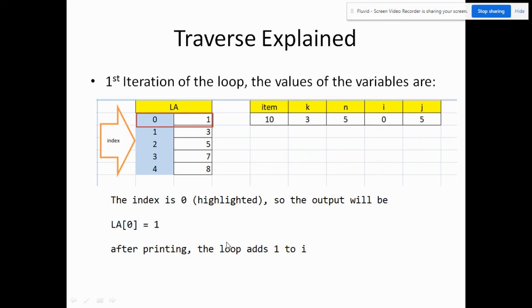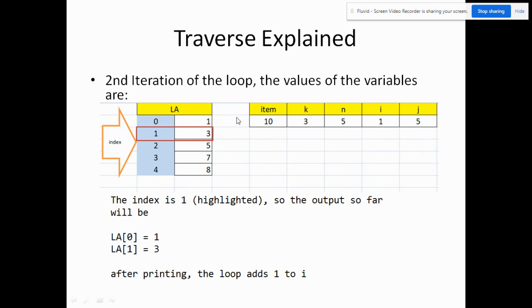After printing, then the loop adds one to i. In the next loop, in our second iteration, i now is equal to 1.